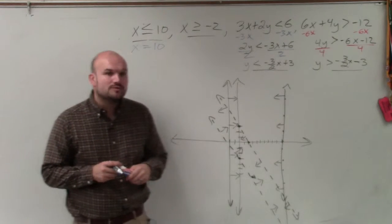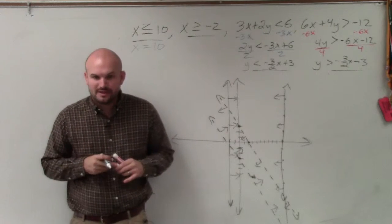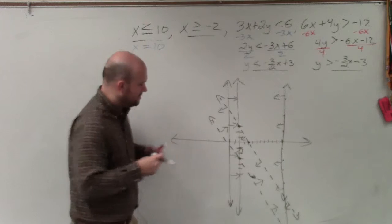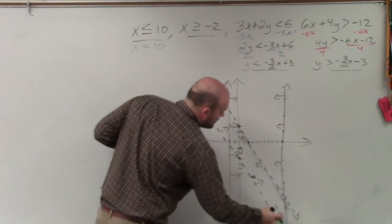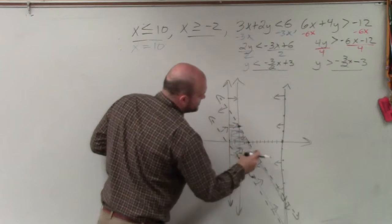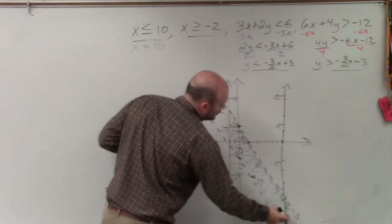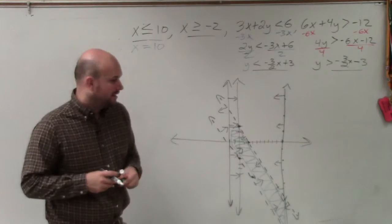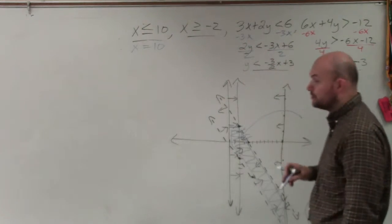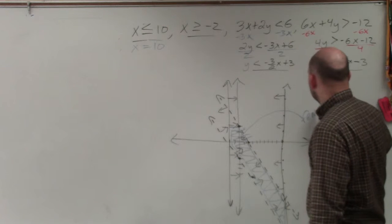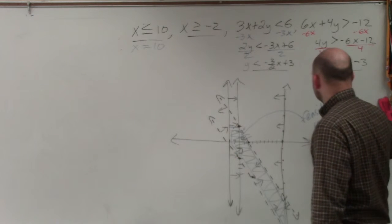OK. So do you guys see the only region where every single inequality is true? It's going to be this nice little region here. So I'm just going to shade the region where they're all true. And that region, when you have a region that is true for both inequalities, or more than one, that's called our feasible region.